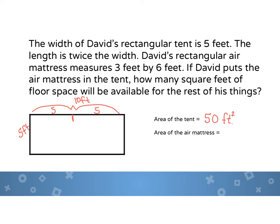Now I'm going to draw the air mattress inside the tent and then we're going to find the area of the air mattress. Okay, so the air mattress is 3 feet by 6 feet. I tried to draw it a little bit to scale. It's not exactly. So the area of my air mattress or David's air mattress is 3 times 6.